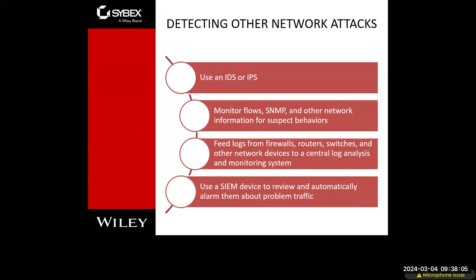For detecting other types of network attacks, you use an intrusion detection system, intrusion prevention system. You monitor your NetFlows, SNMP data, log feeds from your firewalls, routers, switches, servers, and end devices. Lots and lots of logs — this is called log aggregation. You can feed that into what is called a SIEM, Security Incident and Event Management Platform, to review and automatically alarm and even take action on that traffic.